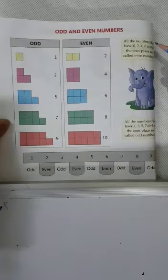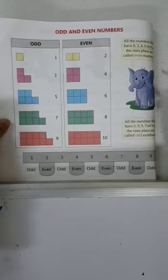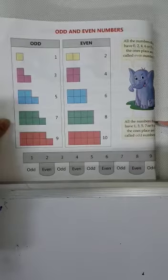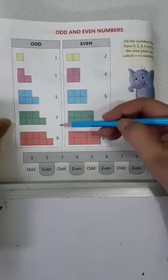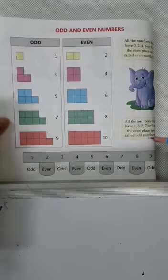All the numbers that have 0, 2, 4, 6 or 8 in the ones place are called even number. And all the numbers that have 1, 3, 5, 7, 9 in the ones place are called odd number.